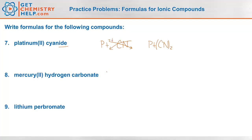Mercury(2): that would be Hg 2 positive. Hydrogen carbonate: as you may recall from our lesson on polyatomic ions, hydrogen carbonate is like adding an H+ onto whatever is here. So hydrogen is H+ and carbonate is CO3 2 minus. Put those together and you get HCO3 — the positive and the 2 negative just become a single negative. Then cross over the 2 and the 1, and we get Hg(HCO3)2.